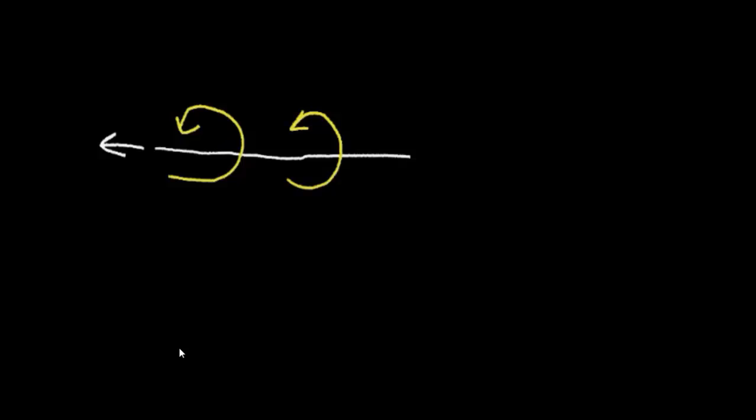For example, if I were to put a compass near this wire, the compass needle would change direction. Now the needle in the compass is just a little magnet. It's a magnetic material. So this magnetic field that I create in this wire by running the current changes the direction of the compass.